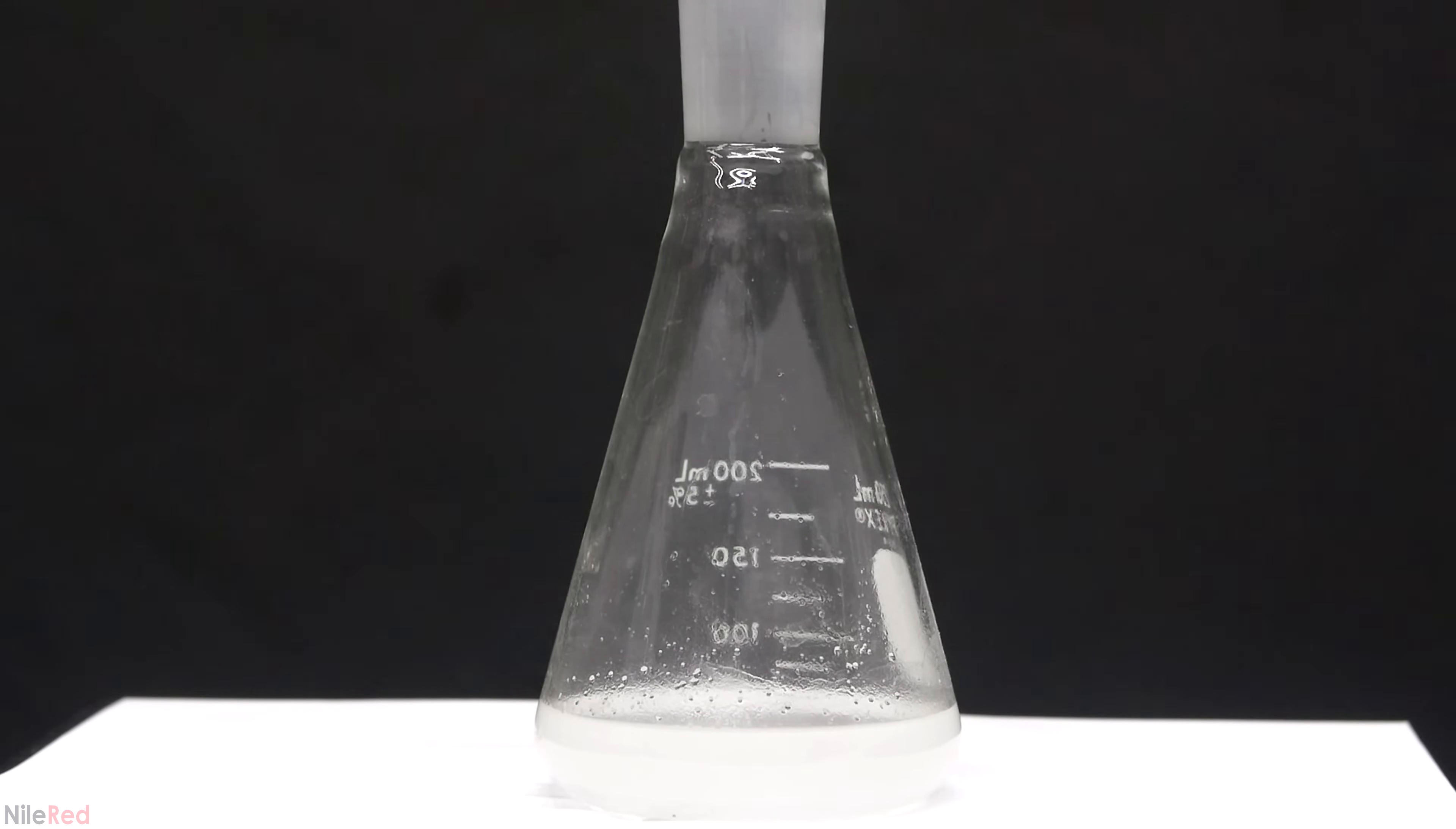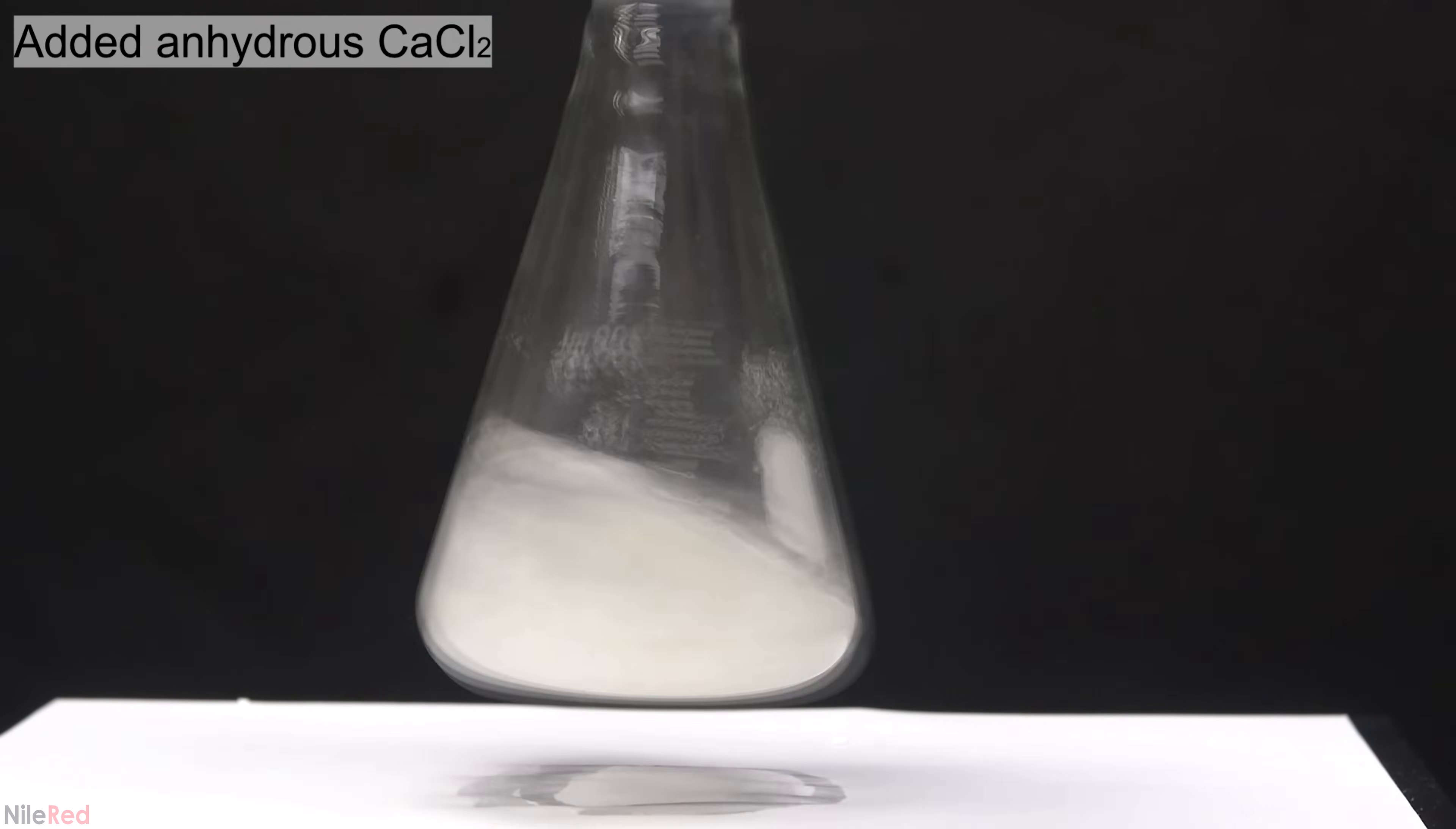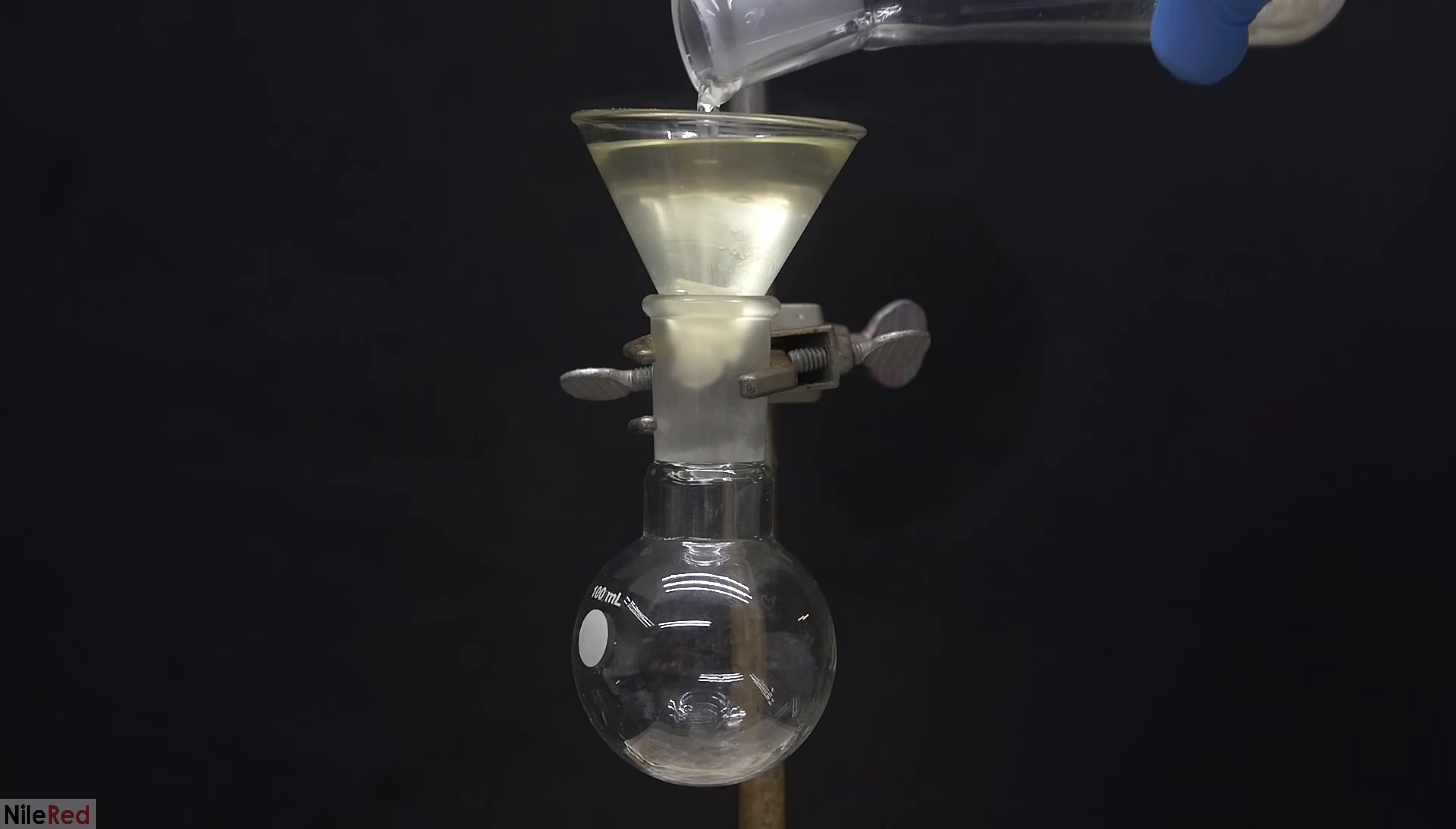The cloudiness of the 1-bromopentane is due to the presence of water, so we're going to need to dry things up a little bit using a drying agent. I chose to use calcium chloride as my drying agent, so I just dumped a bunch in, swirled it around, and let it stand for a while. The calcium chloride dries the 1-bromopentane by forming a complex with the water. The flask was stoppered and I left for an hour, and when I came back we can see that the solution is much clearer.